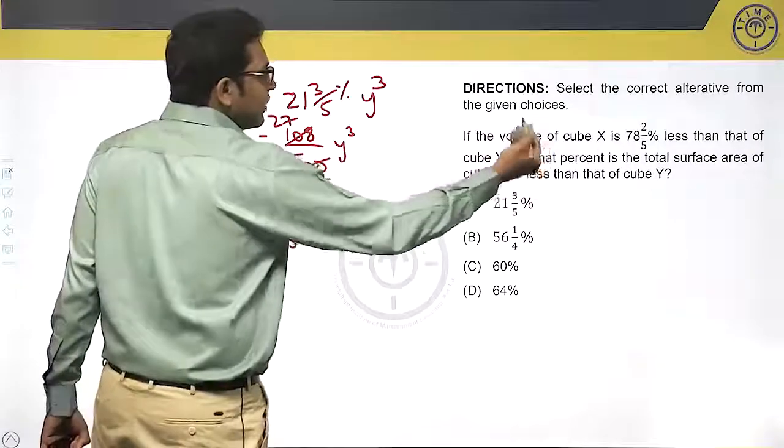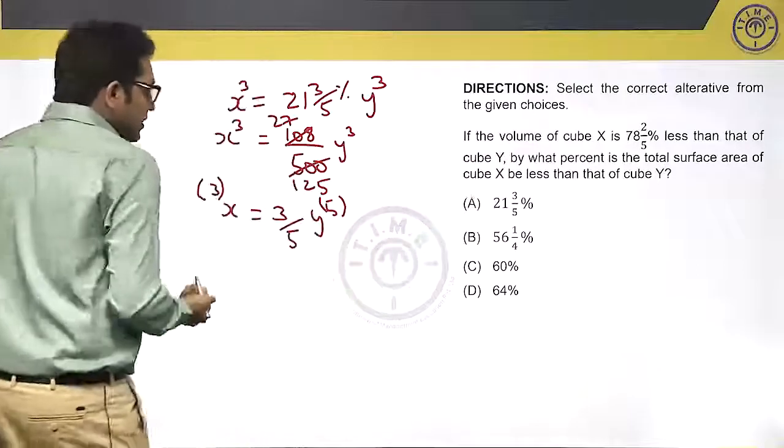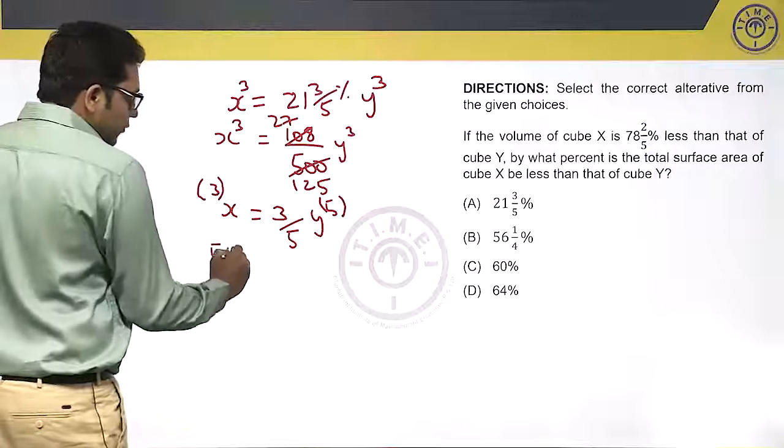What percentage is the total surface area of cube X less than that of Y? Total surface area is 6a². So 6 times 3², which is 54.